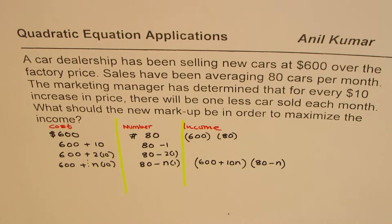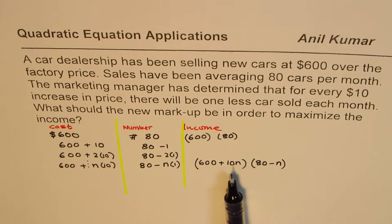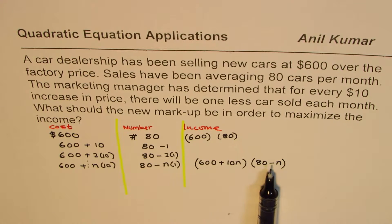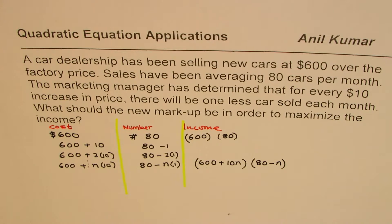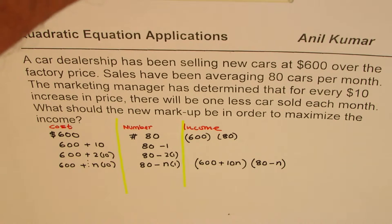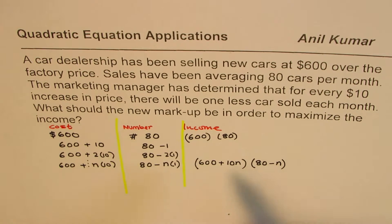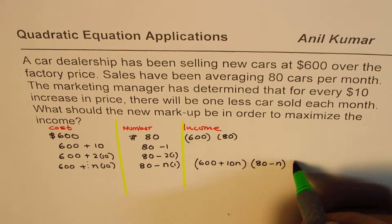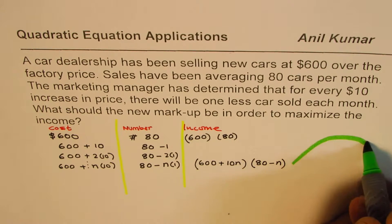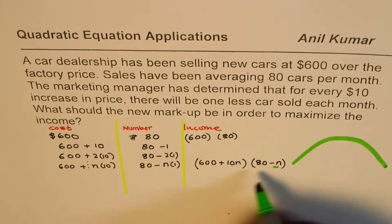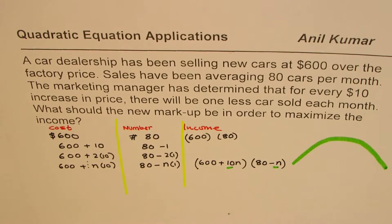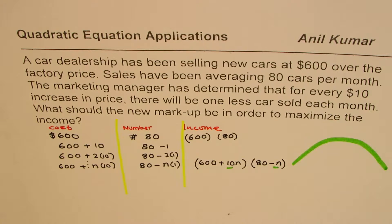But that kind of gives us an idea that this when multiplied, 10n and minus n will give us minus n squared. And that means that we are looking for a parabola. So if that is the income, we are looking for a parabola which is kind of like this. Because this when multiplied will give you n square.